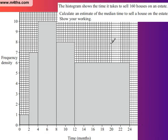We're now moving our knowledge of histograms on a little more. The histogram shows the time it takes to sell 160 houses on an estate. Calculate an estimate of the median time to sell a house on the estate and show your workings.